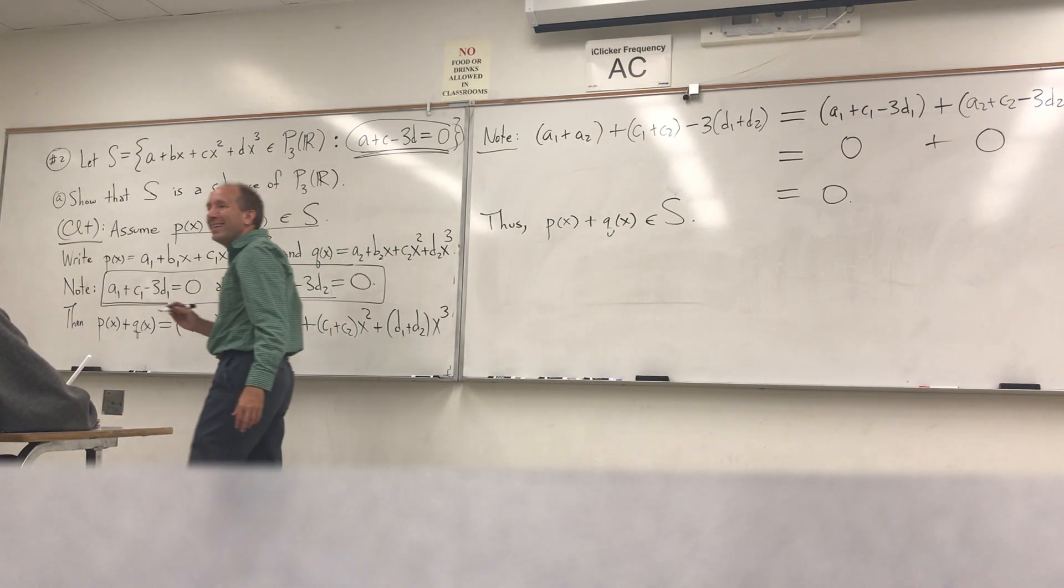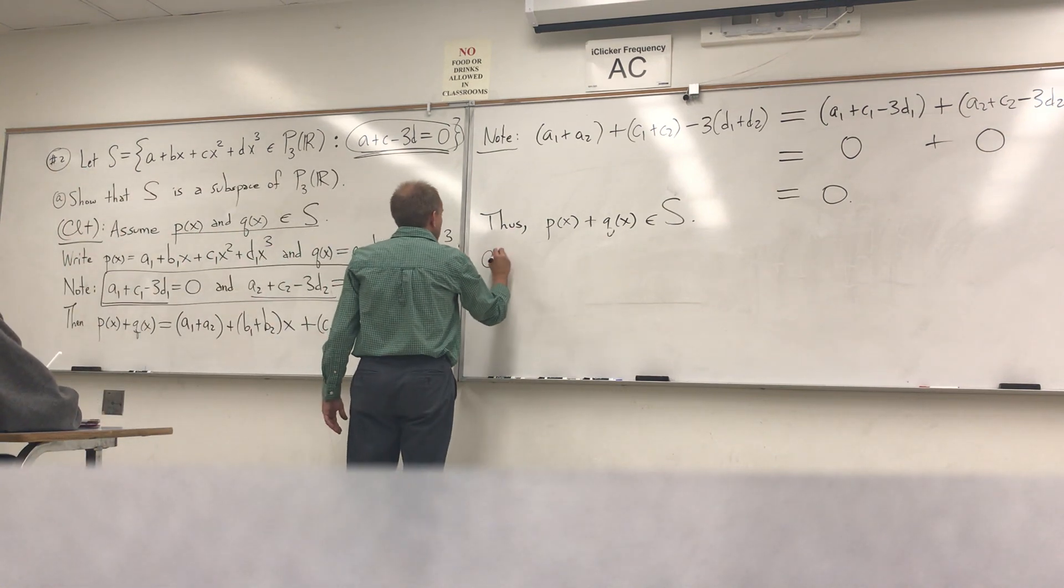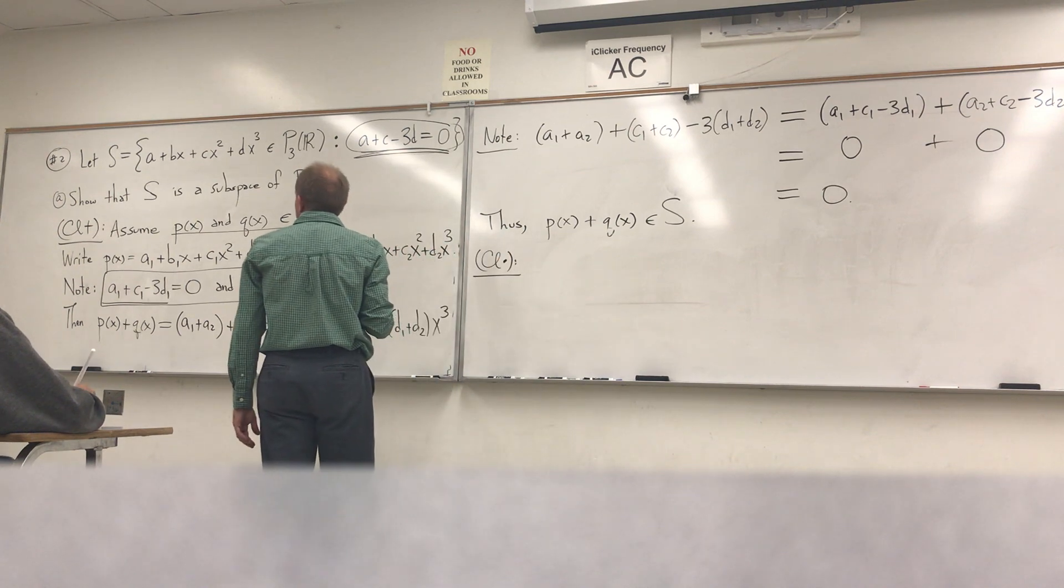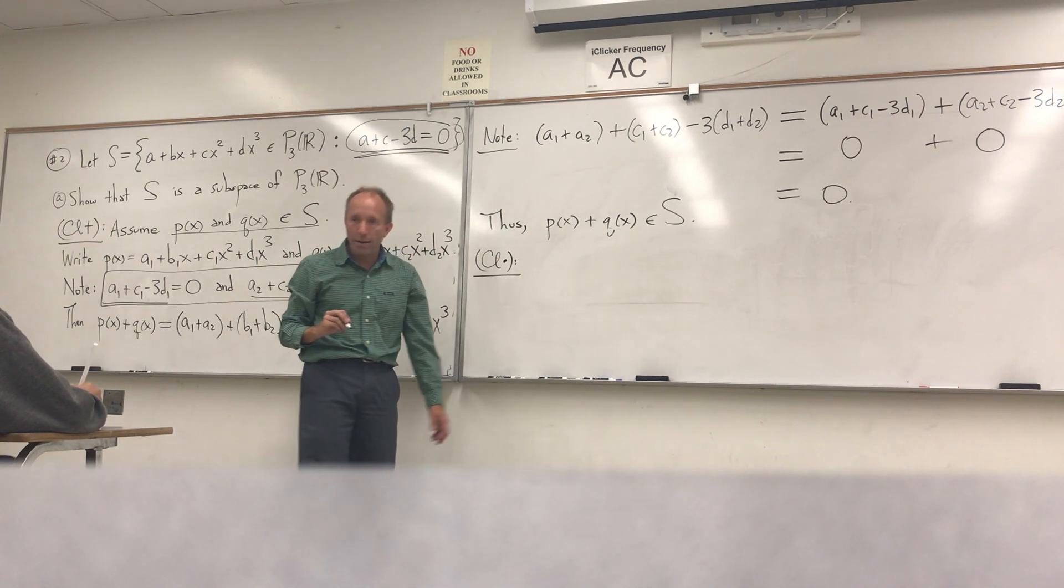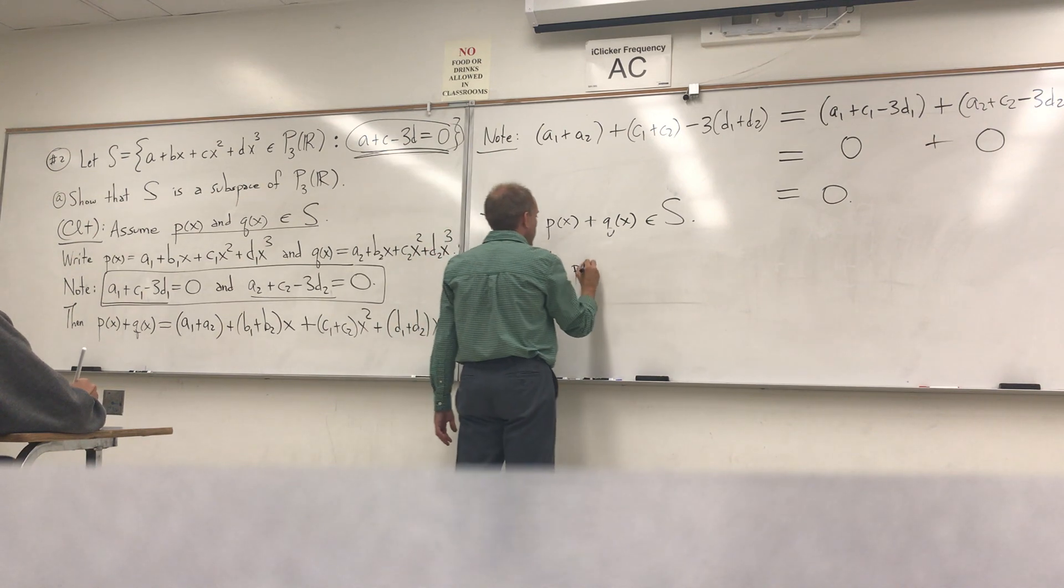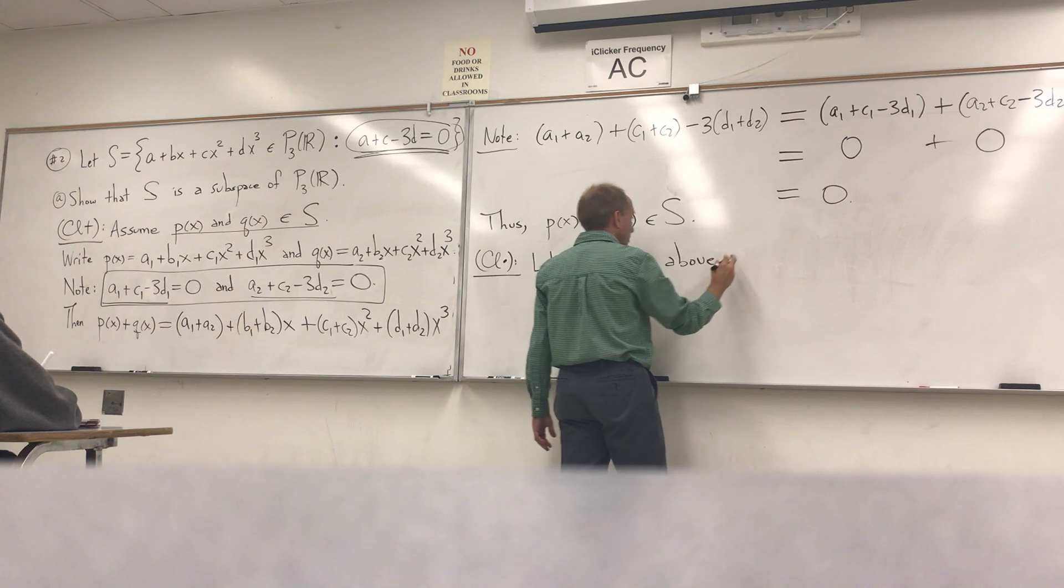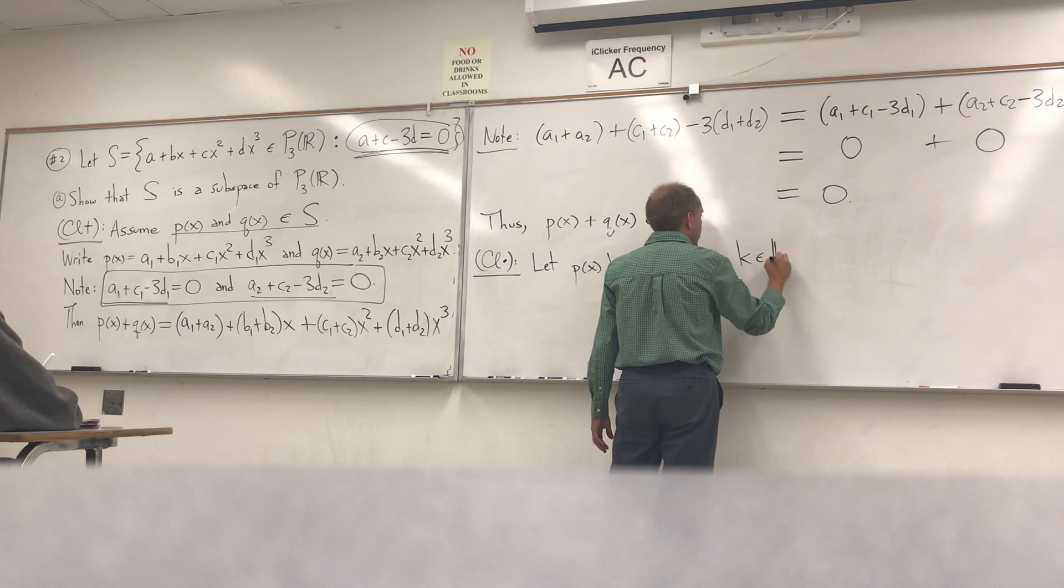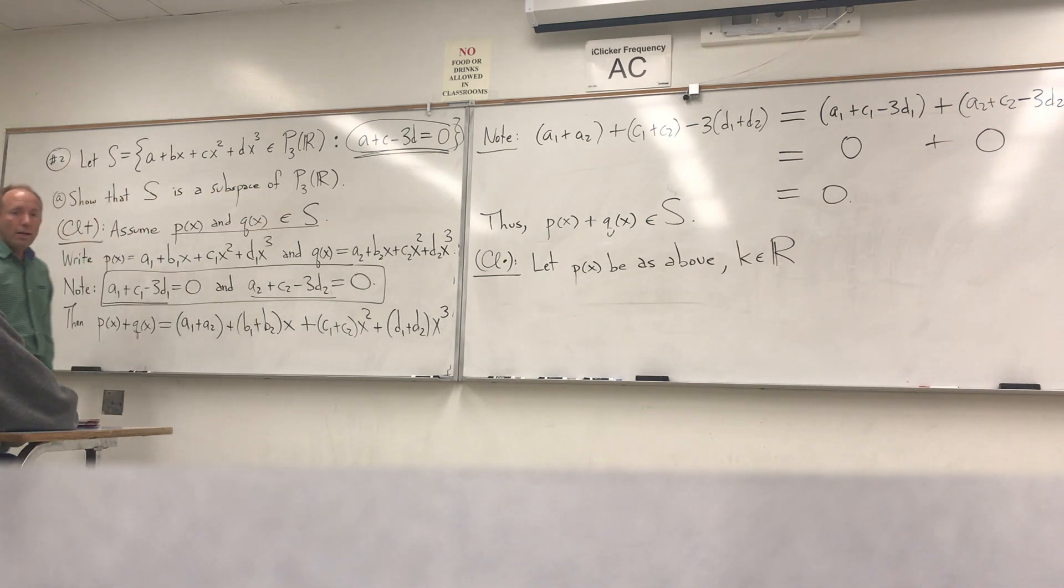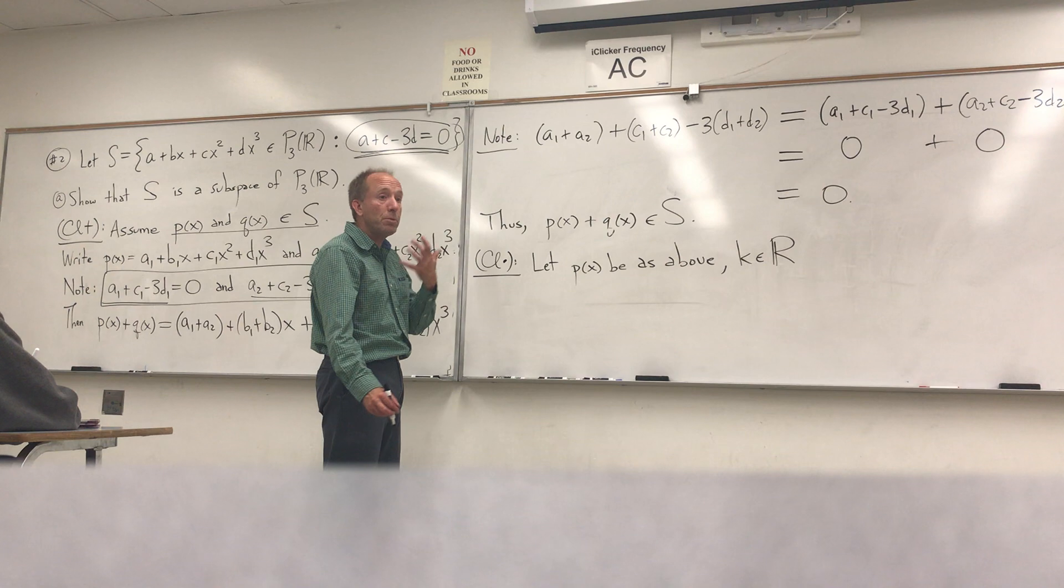What else do I need to do? The scalar multiplication. Exactly. So closure under scalar multiplication. So how do we start that off? Let p of x be as above. OK. Let p of x be as above. Exactly. So p of x is above, and then k is an element of the real numbers. I usually like to use k for my scalar on this part.